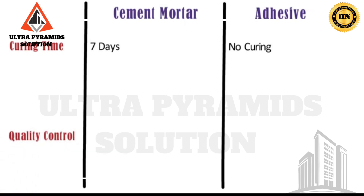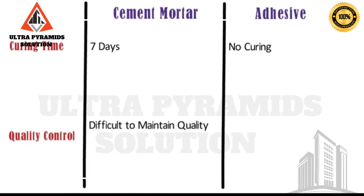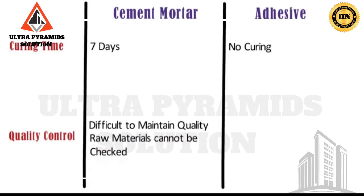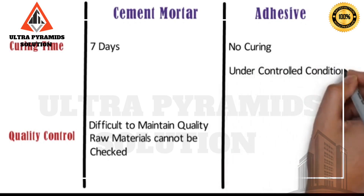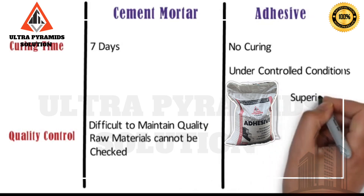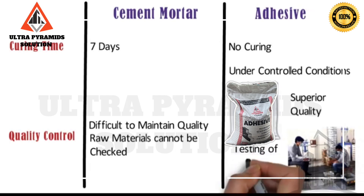Quality control: Cement mortar is prepared on site, and sometimes it is difficult to maintain the quality as it is being prepared there. Also, the raw materials cannot be checked for quality at site. Whereas, adhesives are manufactured in factories under controlled conditions. Quality control measures can be effectively observed and the ultimate product is of superior quality, as manufacturers test the raw materials before use.